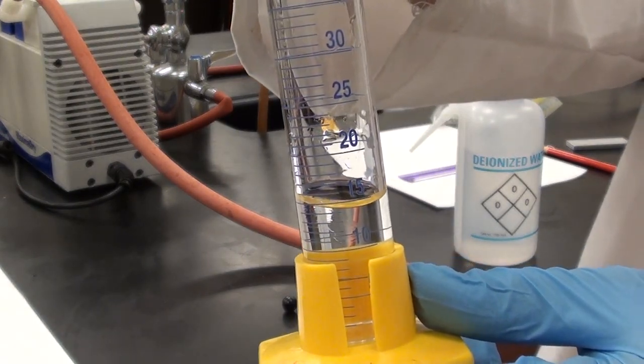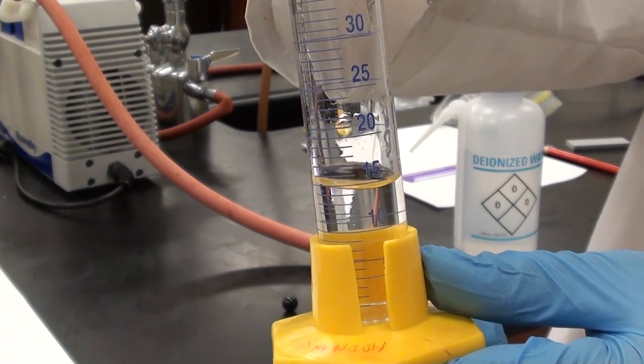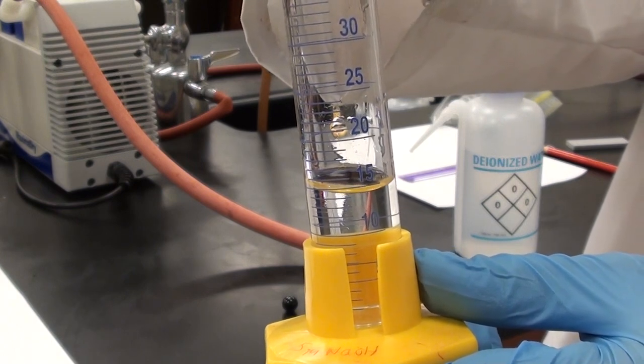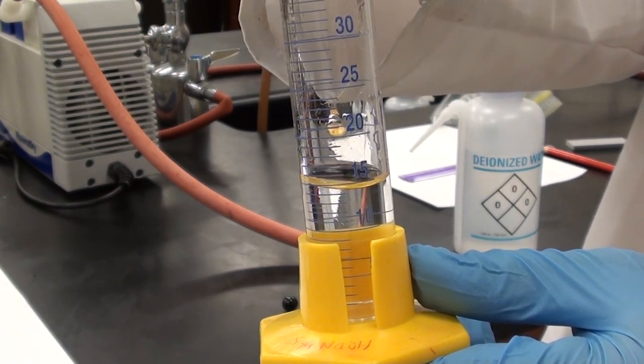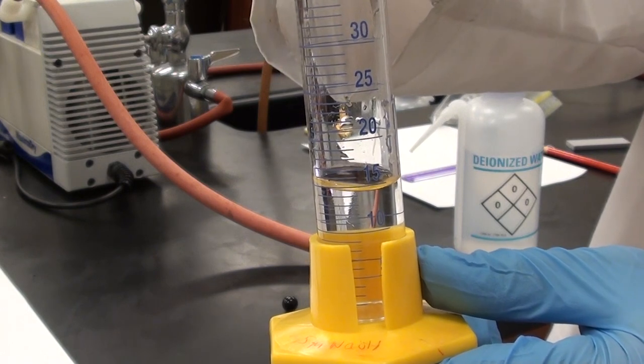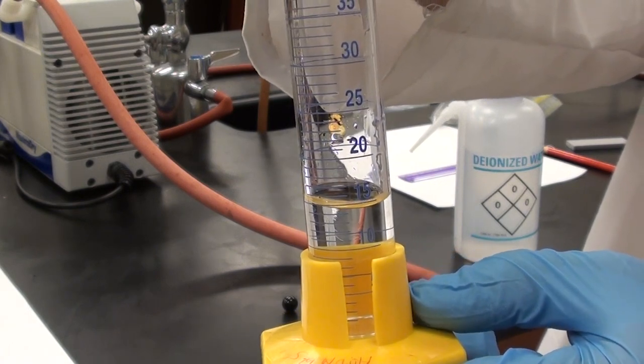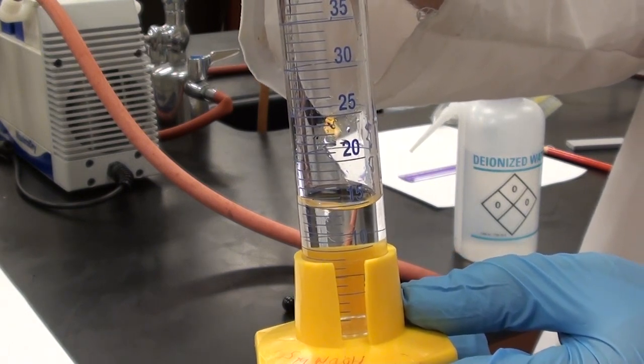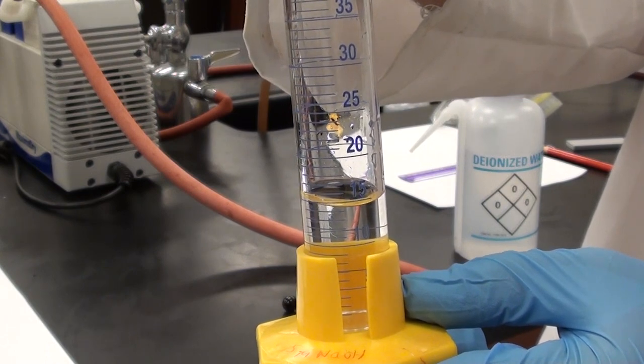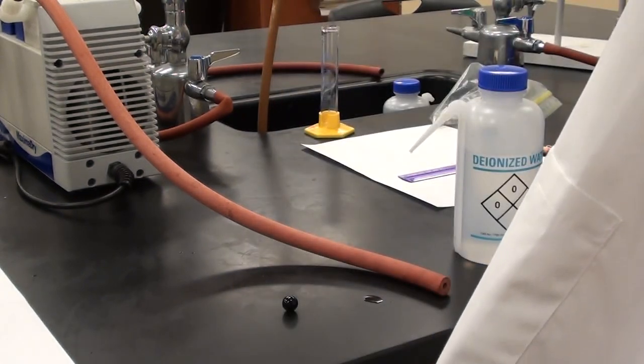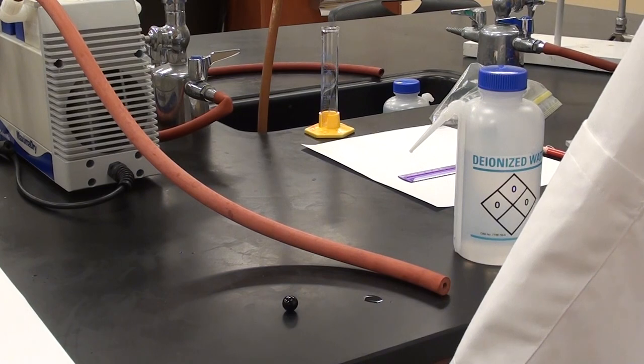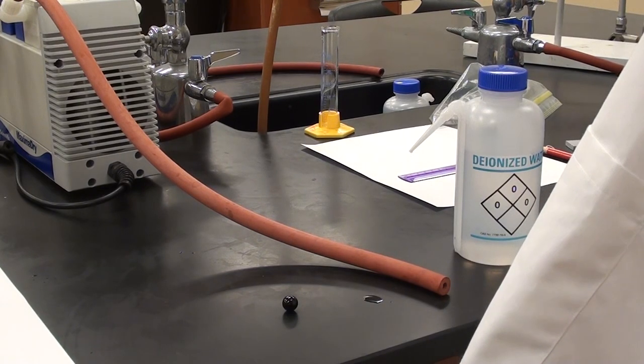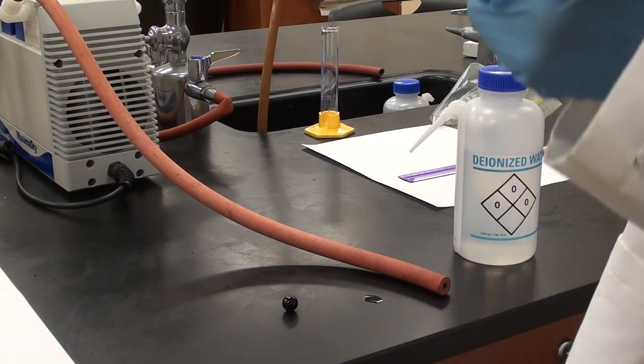So he's going to pull us up close to the camera. You can see what the graduations are like. Between 10 and 15, for example, you can see there's five lines. That means each of those lines is worth one milliliter. So that means we can have an accuracy of 0.5 milliliters. So if this is directly on the line, what would you measure that as, Jim, about 14.5? Yeah, about 14.5.